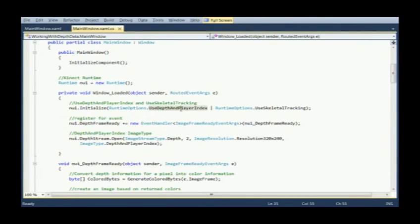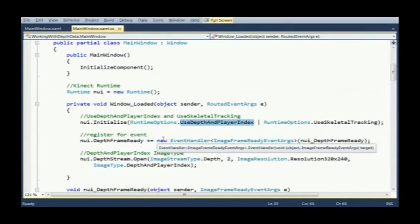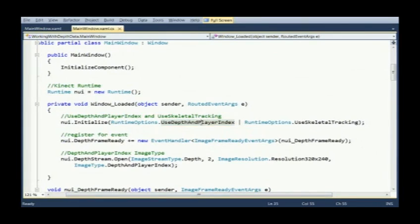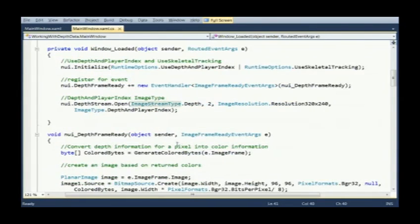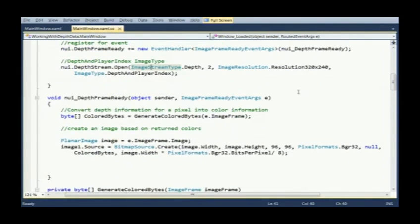So in window loaded, let me just up the font size here. Use depth and player index. So we want to get that player index data back. We're going to use skeletal tracking as well so we can get the player index. We register for the event like we did before. And we open the depth stream with a 320 by, returning a 320 by 240 image. So when this depth frame ready value comes back, we could have used the coding for fun library to just display the monochrome histogram. But instead what we want to do is actually generate our own byte array that represents colors. So we are going to pass in the image frame and do that. So let's just jump to this method.